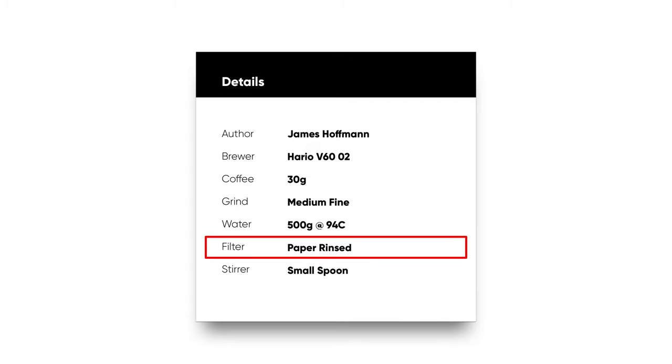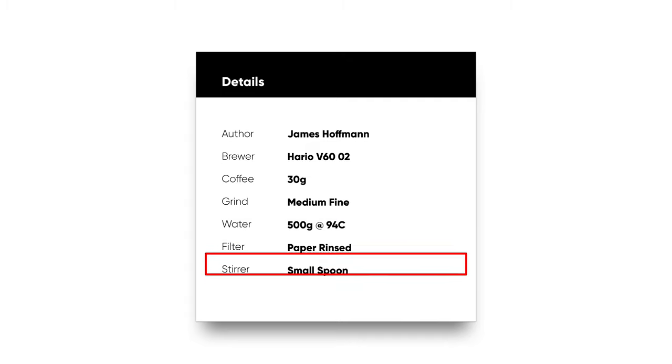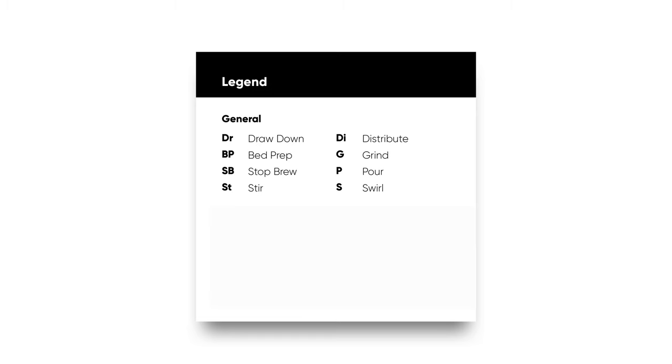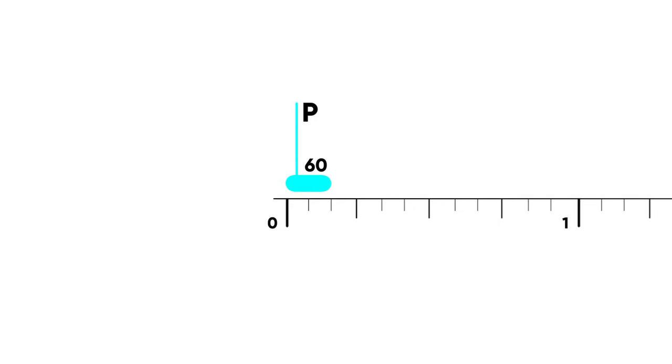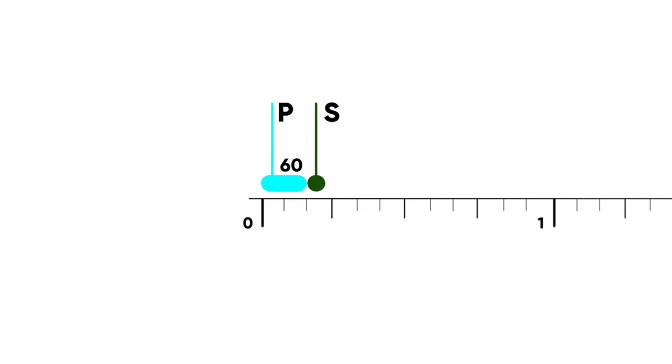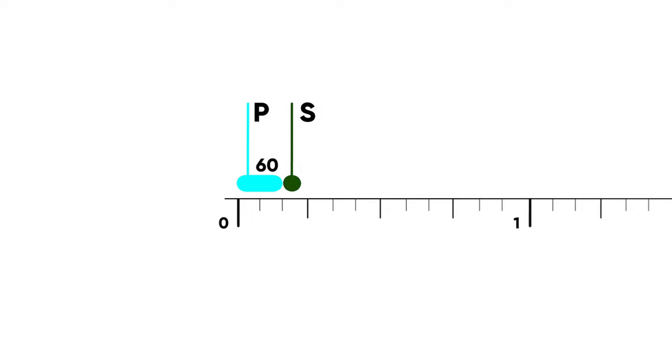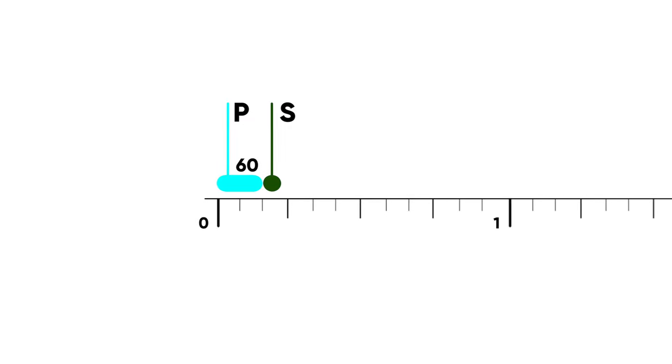We're going to be using a paper filter that's rinsed, and we need a spoon that's going to be used as a stirrer. Next, we draw the timeline with the 5 second, 15 second, and 1 minute divisions and make sure it's long enough for the recipe — in this case at least 3 minutes and 30 seconds long. Refer to the legend and start adding events on the timeline. First up, we have a 10 second pour of 60 grams of water, which is 2x the coffee dose. Right after this, we add a swirl. Note how events that are shorter than 5 seconds can be depicted using a dot or a small circle.